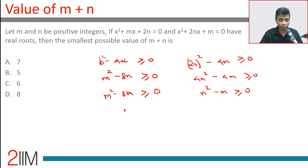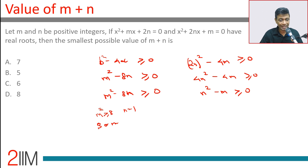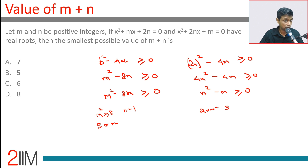Put n equal to 1. Then m² must be greater than or equal to 8, so m must be 3 or more. But if m is 3, then n² - m ≥ 0 requires n ≥ 2 or more. So n equal to 1 does not work — both conditions cannot be satisfied simultaneously.